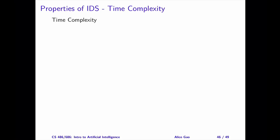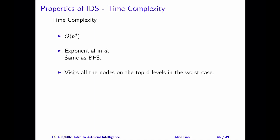What about time complexity? In the worst case, IDS will visit all the nodes in the top D levels. Therefore, IDS time complexity is similar to that of BFS. The number of nodes up to depth D is dominated by the number of nodes at depth D, which is B to the power of D. So IDS time complexity is O(B^D), which is exponential in D, the depth of the shallowest goal node. The asymptotic time complexity of IDS is the same as that of BFS.